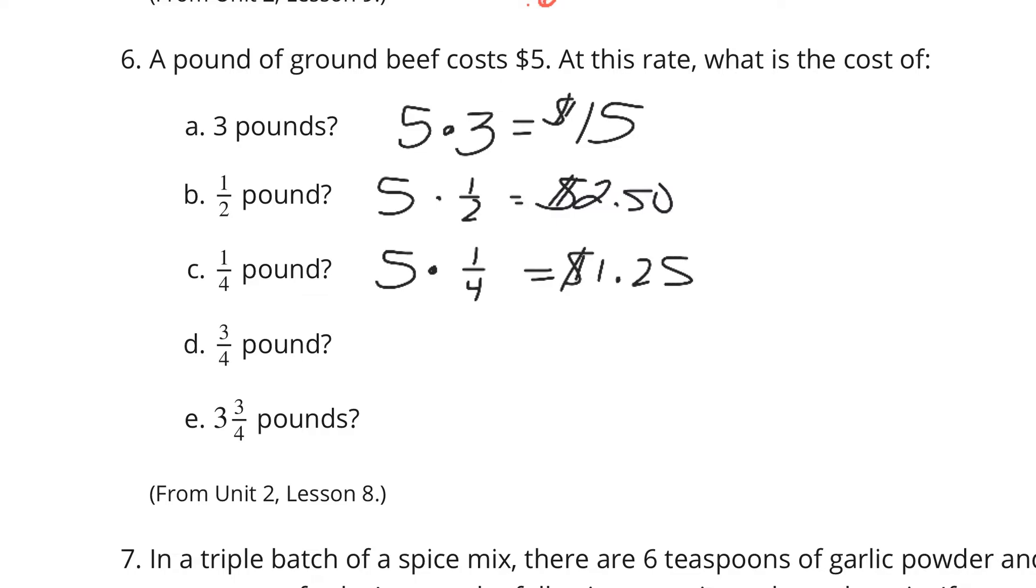And just so you know mentally, how did I get there? Well, a fourth is half of a half. If a half is $2.50 and a fourth is half of a half, then half of $2.50 is $1.25. Now, I can do some similar math logic here to 5 times 3 fourths, if 5 times 1 fourth is $1.25, three of those fourths would be $3.75. Or you could say a half plus a fourth is 3 fourths. And so $2.50 plus $1.25 is $3.75.